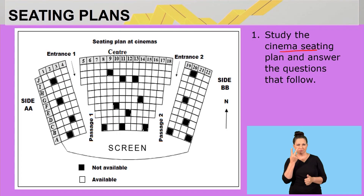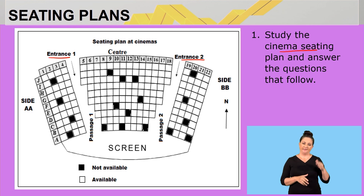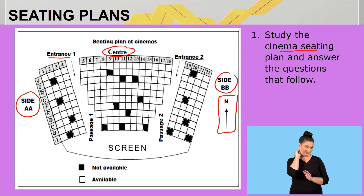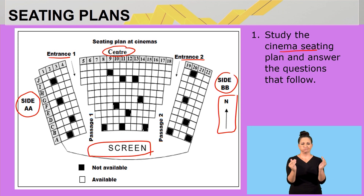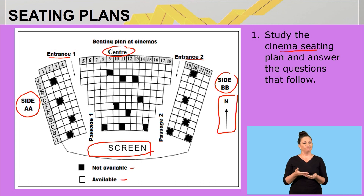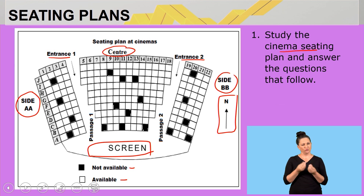Here is our cinema seating plan. We have two entrances: entrance one and entrance two. We also have two sides besides the center — side A and side BB. North is facing upwards, which is very important to know. The screen is right here in front. A key is given indicating seats that are not available and seats that are available. Please note this is what we will be working with.